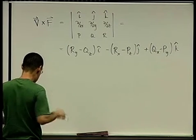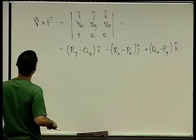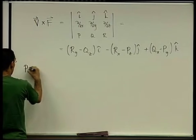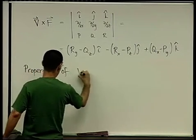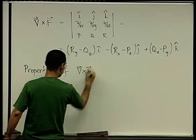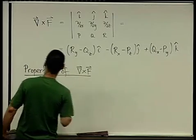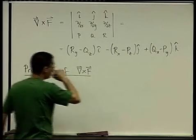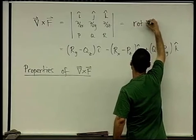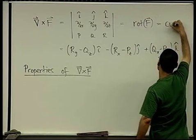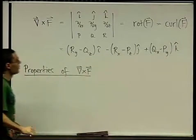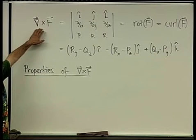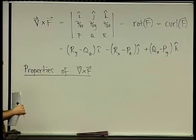Now let's discuss some properties of the curl. By the way, equivalent notation: you will see people write curl(f) or rot(f) — they are all the same. I'm usually going to use the Nabla cross f notation because I think it's the most illuminating; you see it and you know exactly what needs to be done.